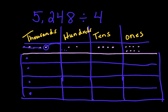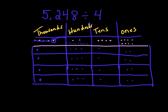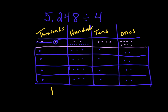So we give 10 hundreds to the hundreds column, making 12 hundreds total. 4 can go into 12. Then we split the 4 tens equally — 4 goes into 40 ten times, so each group gets 1 ten. And we have 8 ones; 4 goes into 8, giving 2 ones per group. So we have 1 thousand, 3 hundreds, 1 ten, and 2 ones. 5,248 divided by 4 equals 1,312.